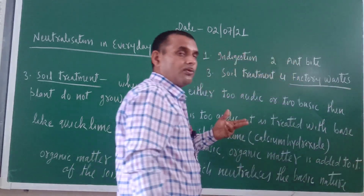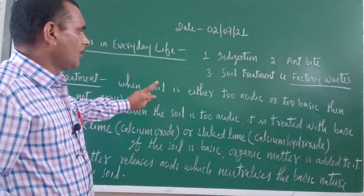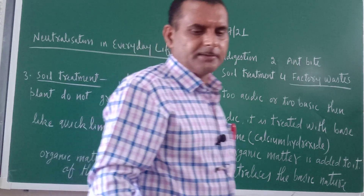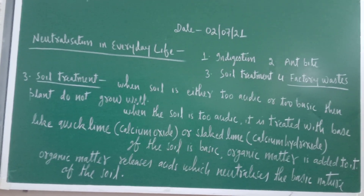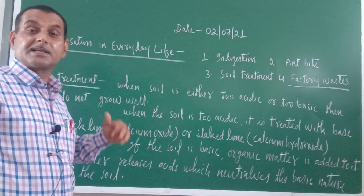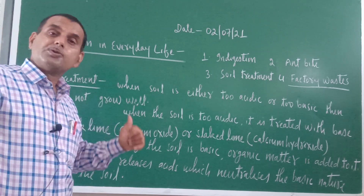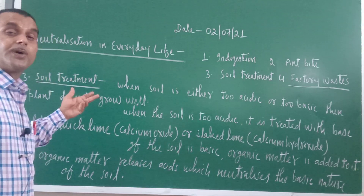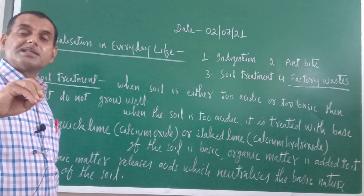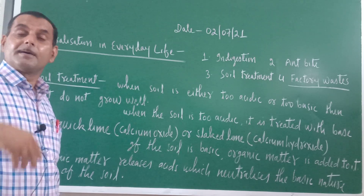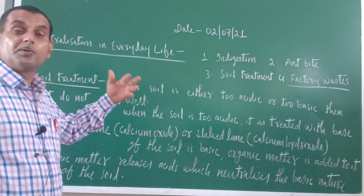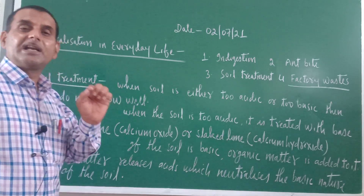Neutralization is involved in soil treatment and also in the treatment of factory waste. I will explain them one by one. Soil treatment means to increase the fertility and productivity of soil. Farmers add chemical fertilizers to soil, but excessive use of fertilizers can make the soil either too acidic or too basic. When soil is either too acidic or too basic, it is incapable of supporting plant growth.